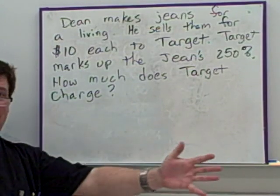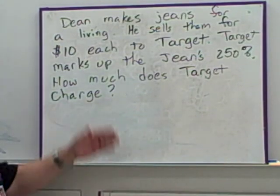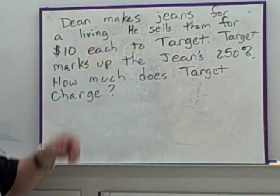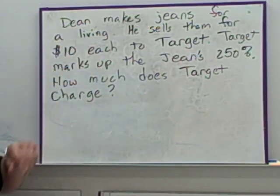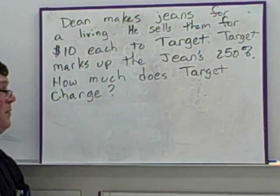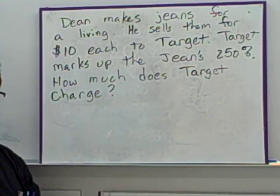Let's go through the manufacturing process here. We've got Dean. Dean makes jeans for a living. He sells them for $10 each to Target. Target marks up the jeans 250%. How much does Target charge?